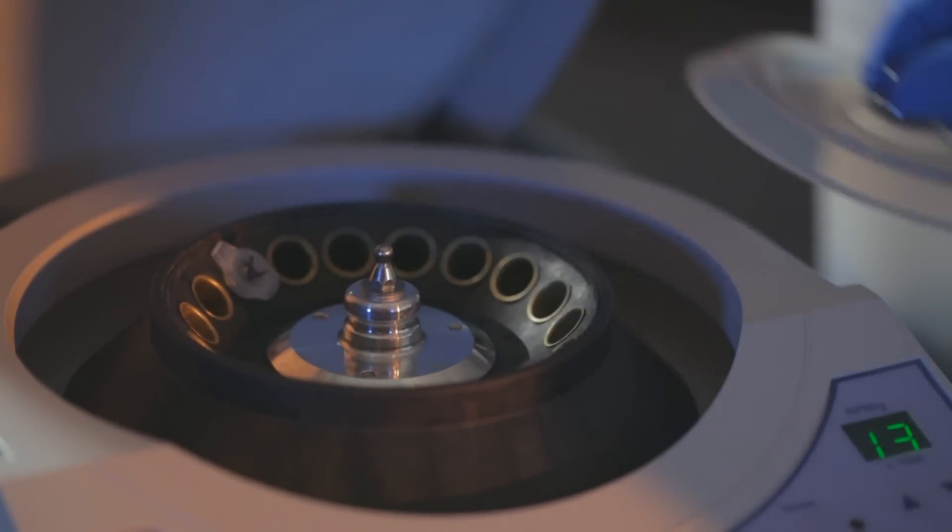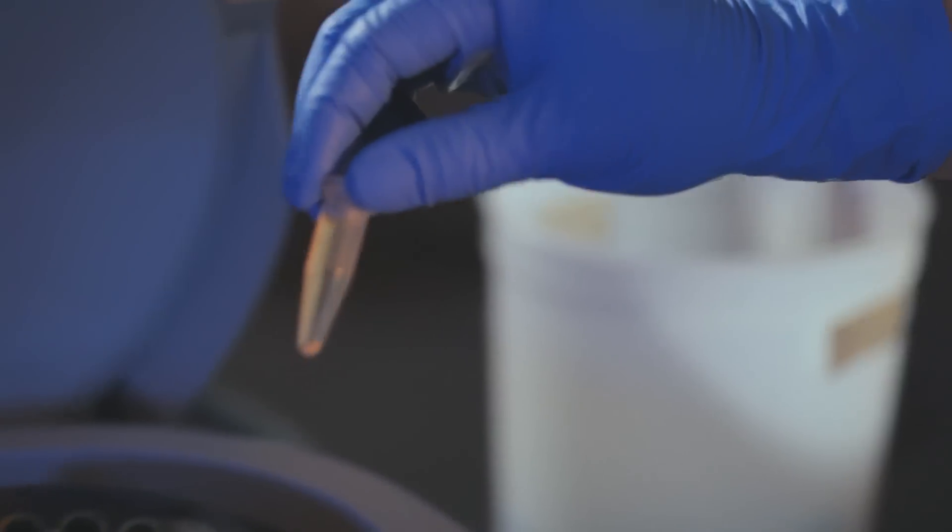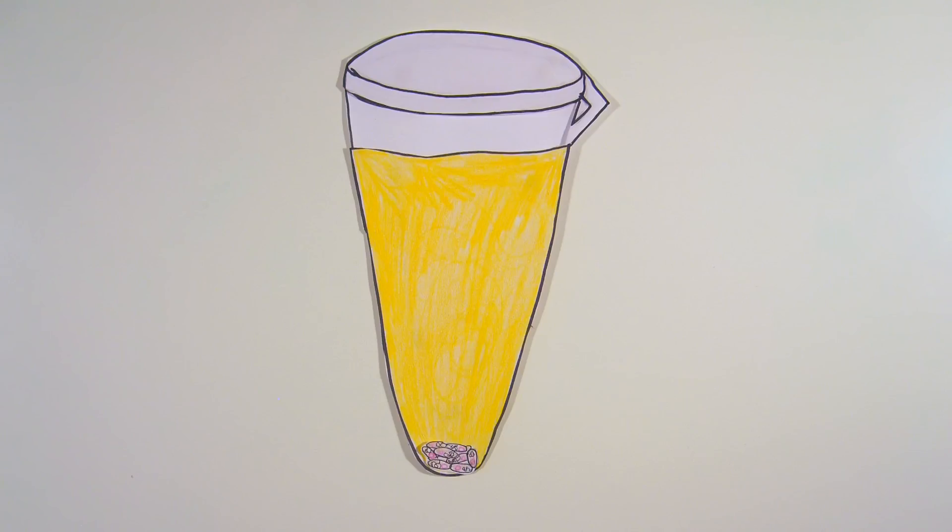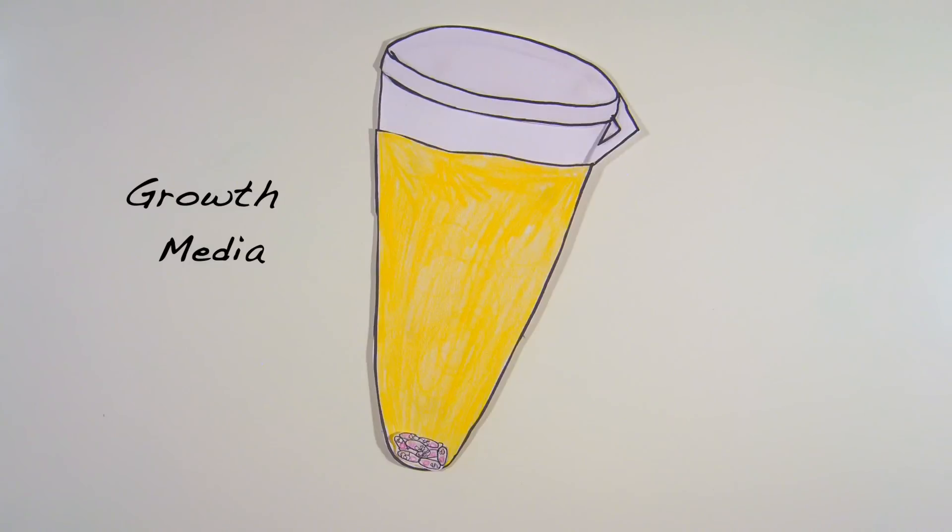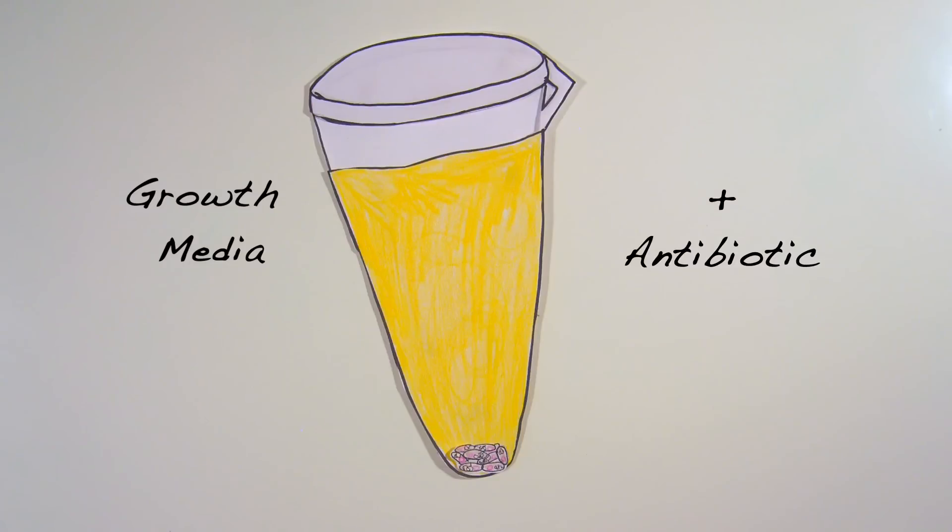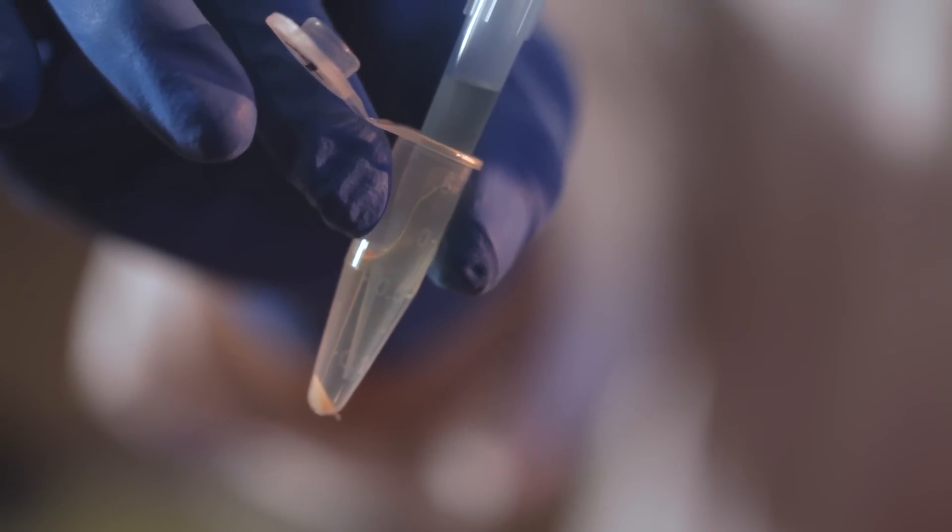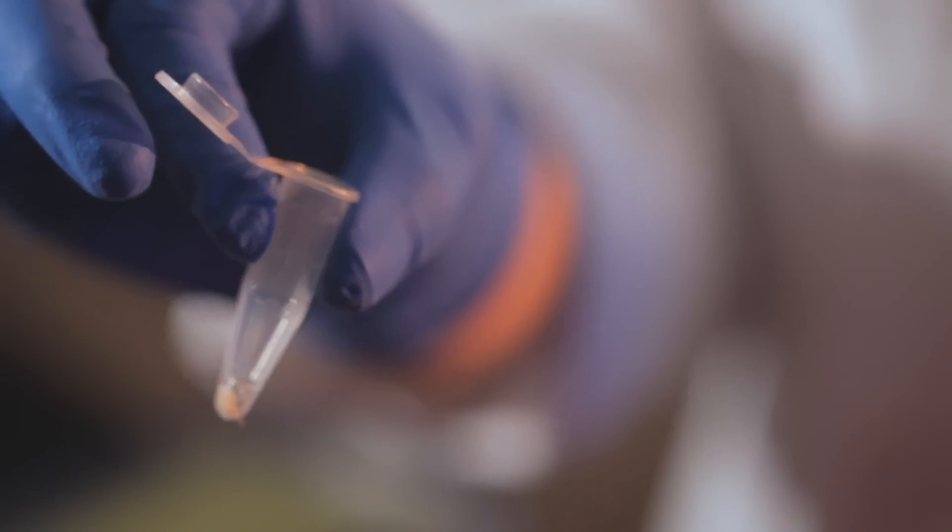At the end of the centrifugation, a small pellet will be at the bottom of the tube. This is made up of the bacterial cells that contain the plasmid DNA you want. The clear liquid supernatant is LB, the bacterial growth media, with an antibiotic such as ampicillin. Remove all traces of growth medium by pipetting or pouring out and discarding the supernatant. Don't worry, the pellet will not move as long as you don't touch it.